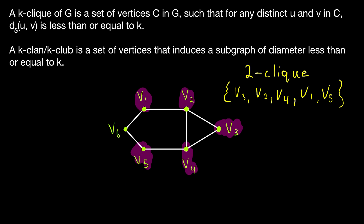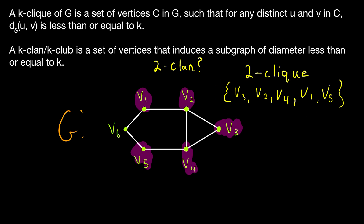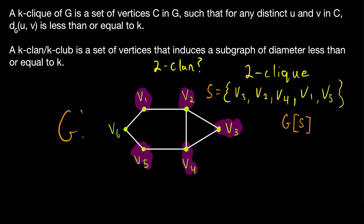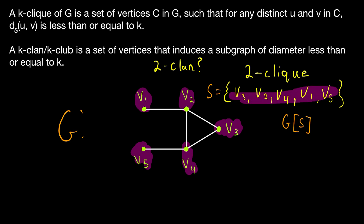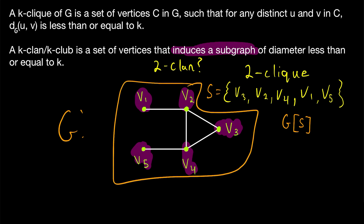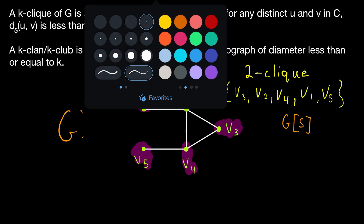So revisiting this two-clique — is it a two-clan? Well, we have to consider the subgraph induced by these vertices. If we call this graph G and this set S, the notation for the subgraph induced by S is G with square brackets around S. The subgraph induced by this vertex set consists of all the vertices in that set and their adjoining edges. So in order for this set of vertices to be a two-clan, the distance between any pair of vertices in the set has to be less than or equal to 2 within the induced subgraph. This is the same as saying that the diameter of the subgraph must be less than or equal to 2.